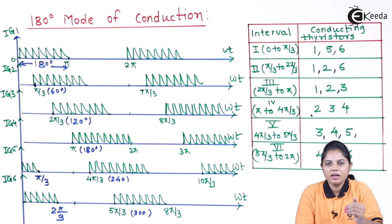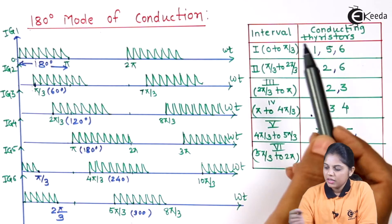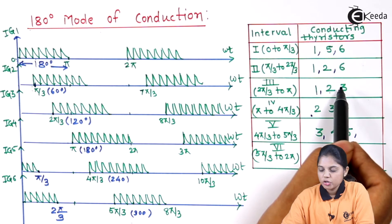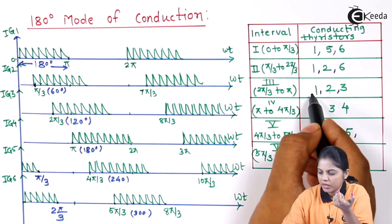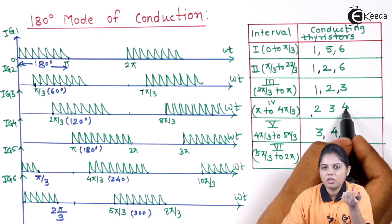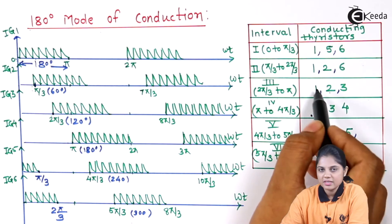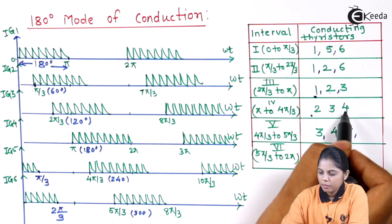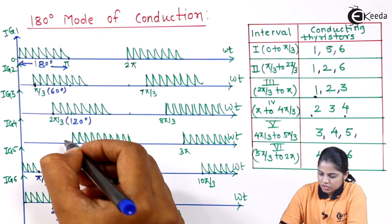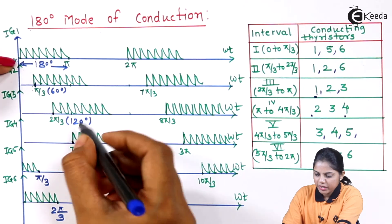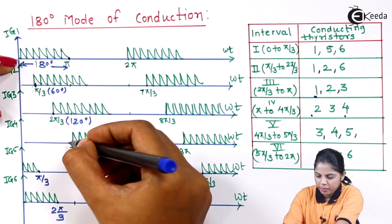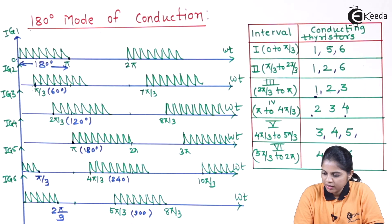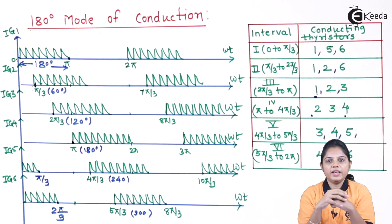The firing of the SCR is in our hands, so we can turn on the SCR at the required time. Notice that from 2pi/3 to pi, thyristors 1, 2, and 3 are on. For the next 180-degree operation, SCR1 must be turned off and SCR4 must be turned on — you can see this is in sequence. At pi, SCR1 is commutated while at the same time SCR4 receives its firing pulse. This is how the 180-degree mode of conduction works. I hope you have understood the waveforms for the 180-degree mode of conduction.